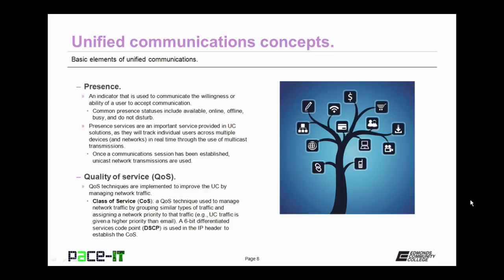Once a communication session has been established, multicast communication is dropped and unicast network transmissions are used. Another UC concept is quality of service. Quality of service techniques are implemented to improve unified communication by managing network traffic. The most common implementation is class of service, COS — a technique that manages network traffic by grouping similar types of traffic and assigning a network priority to that traffic. For example, unified communication traffic is given a higher priority than email. A 6-bit differentiated service code point, DSCP, is used in the IP header to establish the class of service.